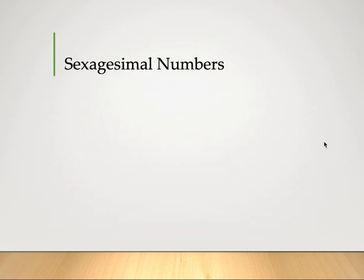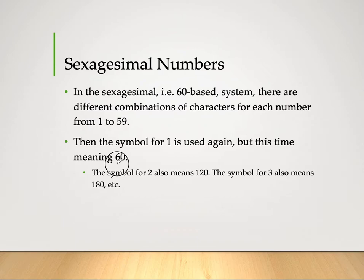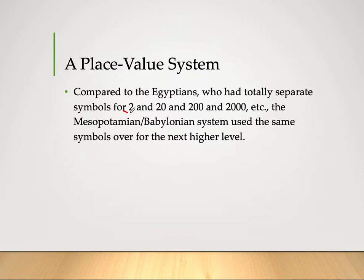In the sexagesimal system — that is, the base-60 system — there are different combinations of characters for each number from 1 to 59. Then the symbol for 1 is used again, but now it means 60. The symbol for 2 also means 120, the symbol for 3 also means 180, and so on. This is a place value system, compared to the Egyptians who had totally separate symbols for 20, 200, and 2000. The Babylonian system used the same symbols at the next higher place value, just as we do in our decimal Hindu-Arabic system today.